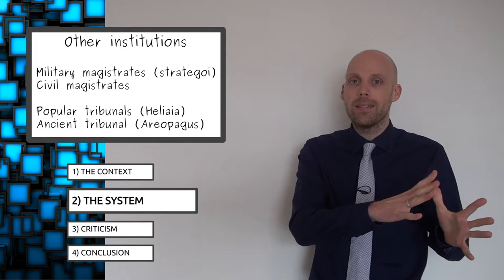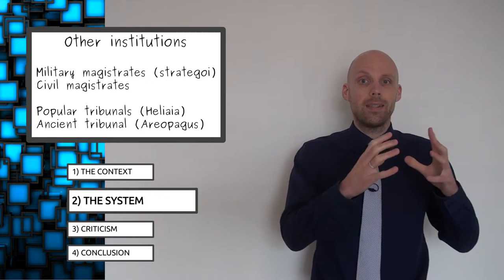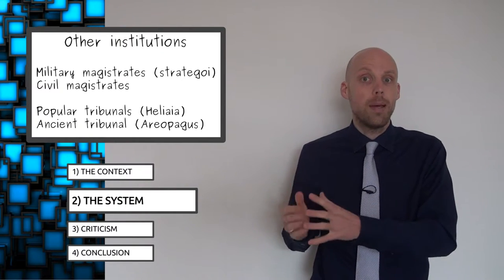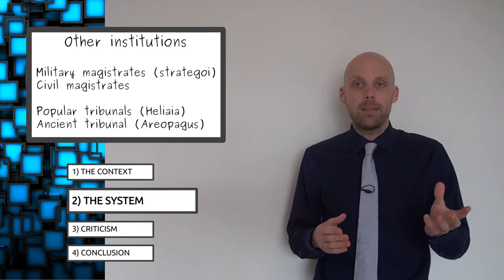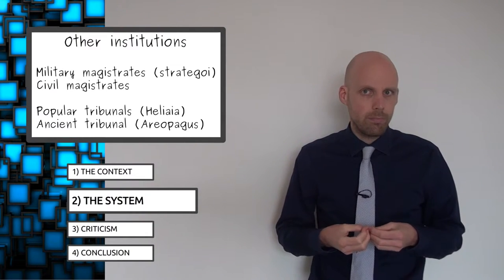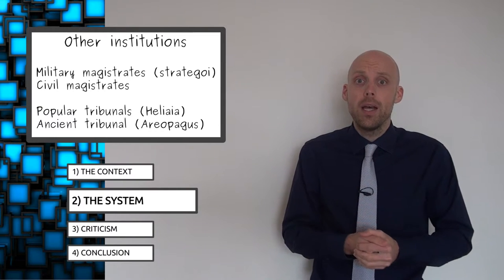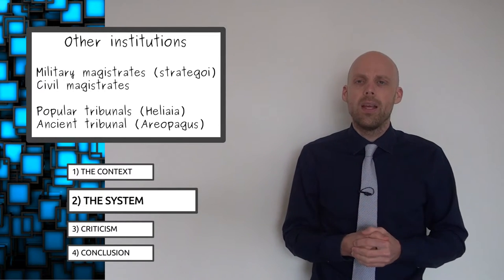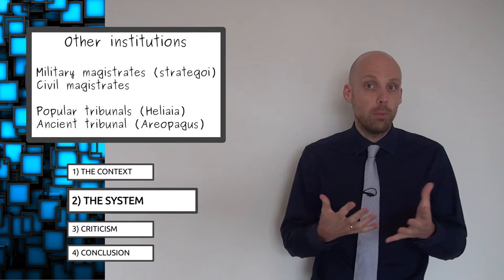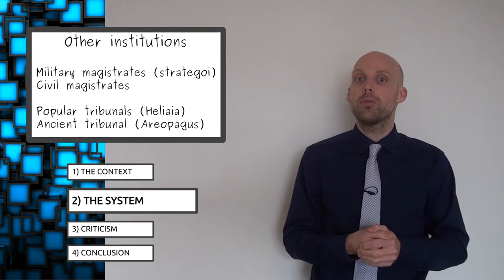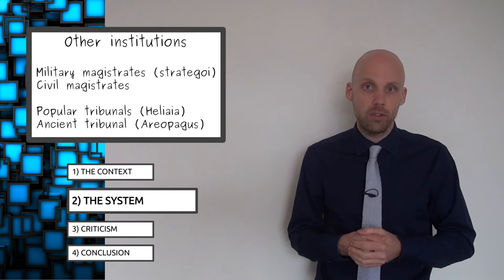So aside from the ecclesia and the boule, Athens also had strategoe, or generals, and civil magistrates, who were elected by the ecclesia and charged with running the military and the civil service. Again, citizens had to be at least 30 years old to serve, and terms lasted one year. The strategoe were a rare feature of continuity. They didn't have term limits. Pericles, for example, served 15 consecutive terms as general.